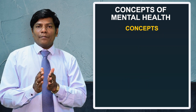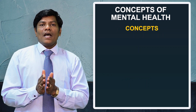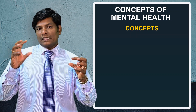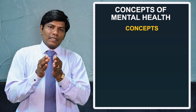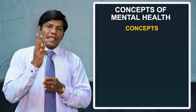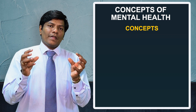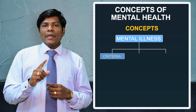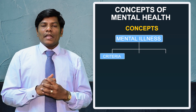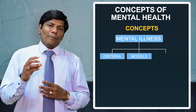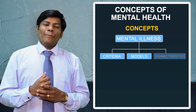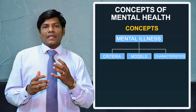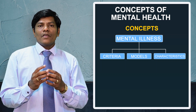The concept of mental health and mental illness — mental health is normalcy, mental illness is abnormalcy — will be explained in three important ways: number one, based on criteria; number two, based on models; and number three, based on characteristics. Under criteria, there are two types.